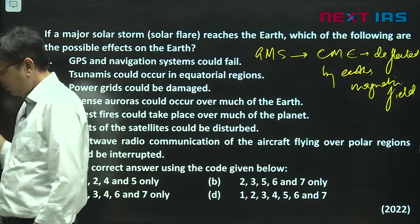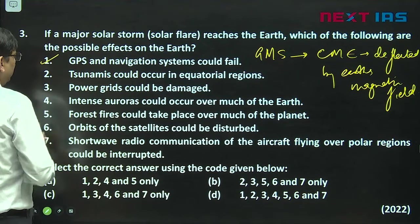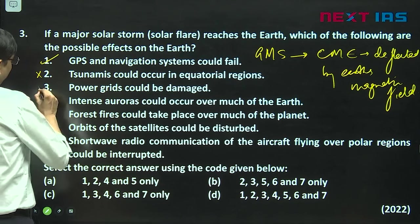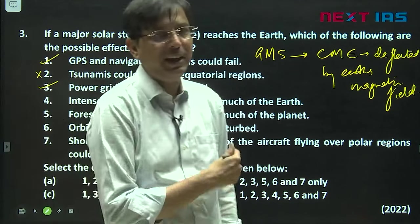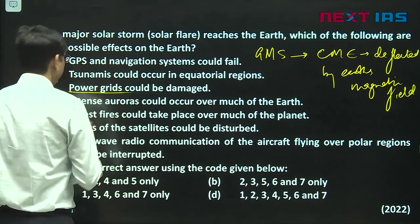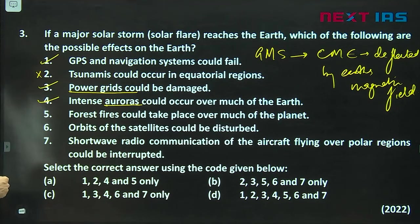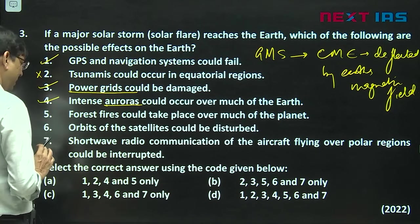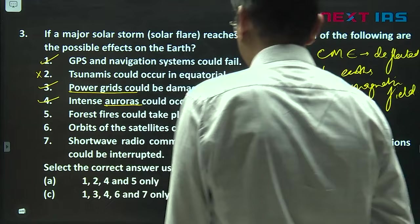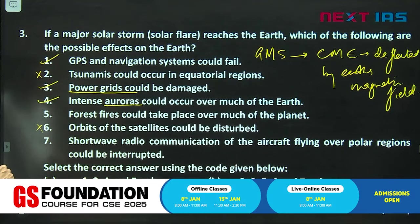Obviously if it is coming towards earth, you will have the GPS navigation system, the satellites will get affected by it. Tsunamis could occur. Now obviously tsunamis, there is no reason for this to be associated with tsunamis. Power grids will be damaged, because when this plasma enters into the magnetic field, it will cause generation of current and magnetic field, which is going to damage the power grids. This has happened.